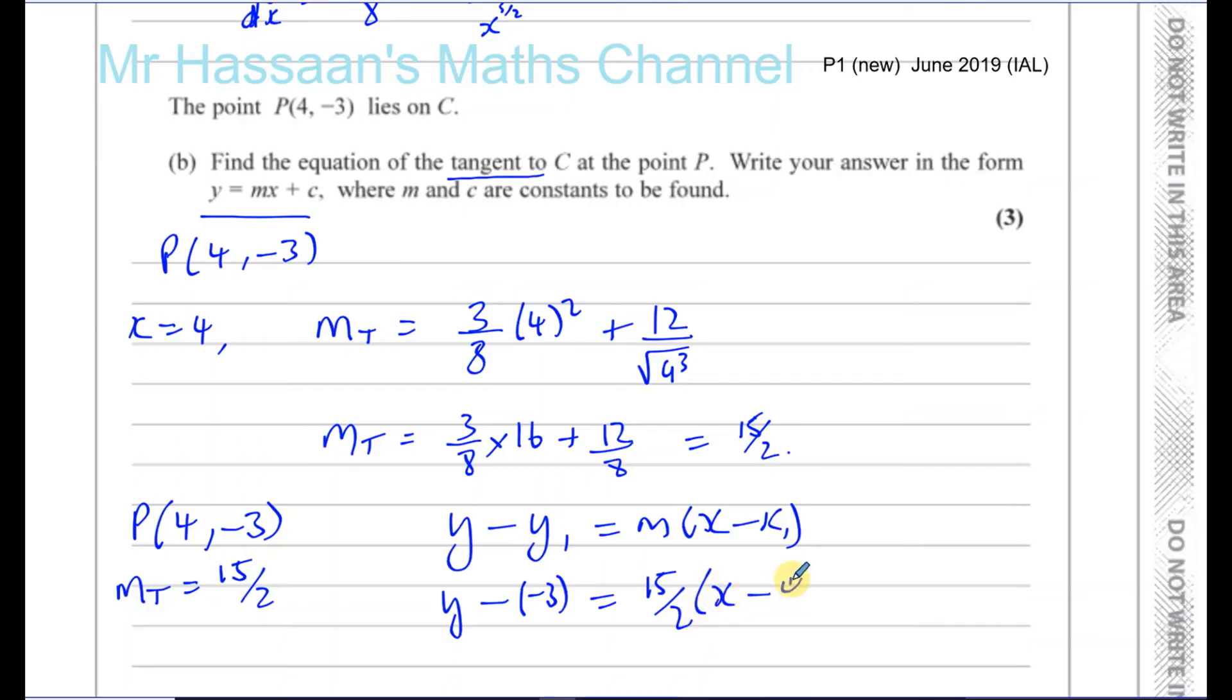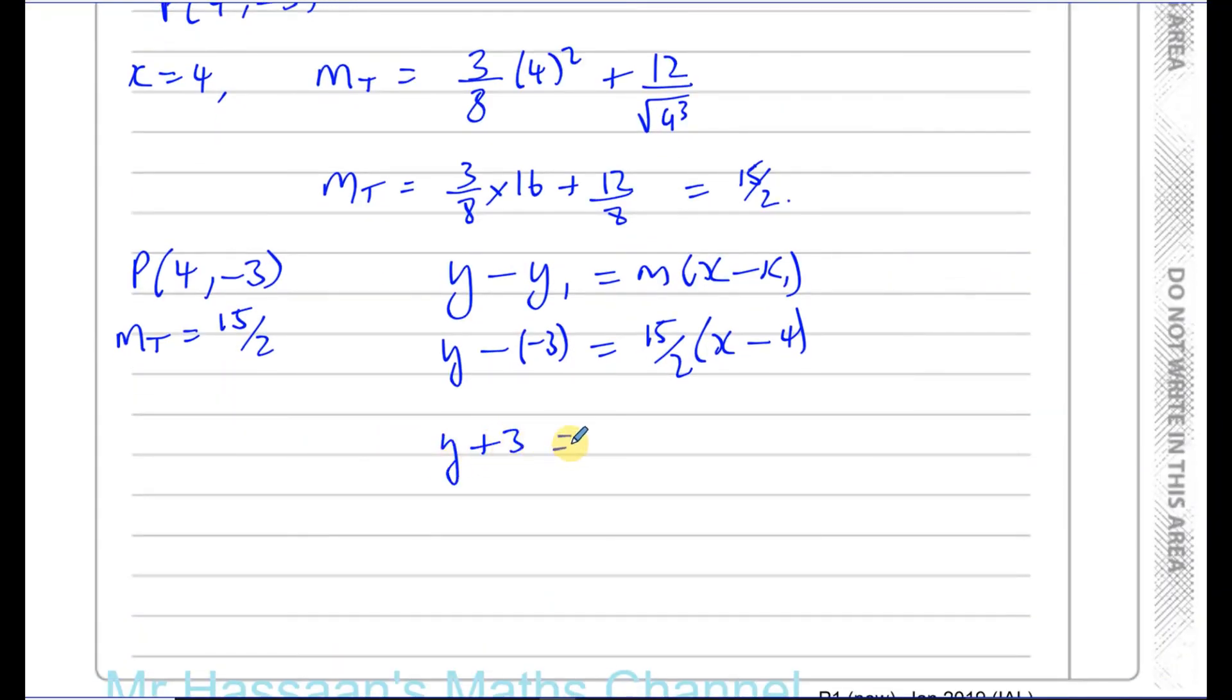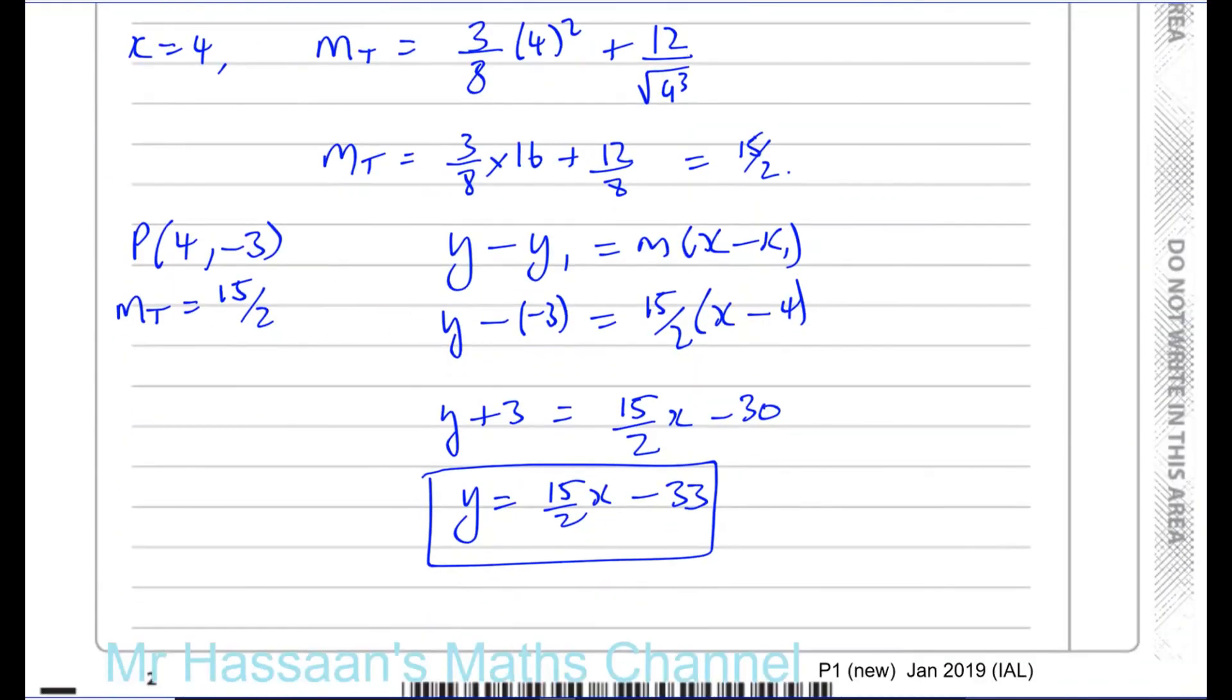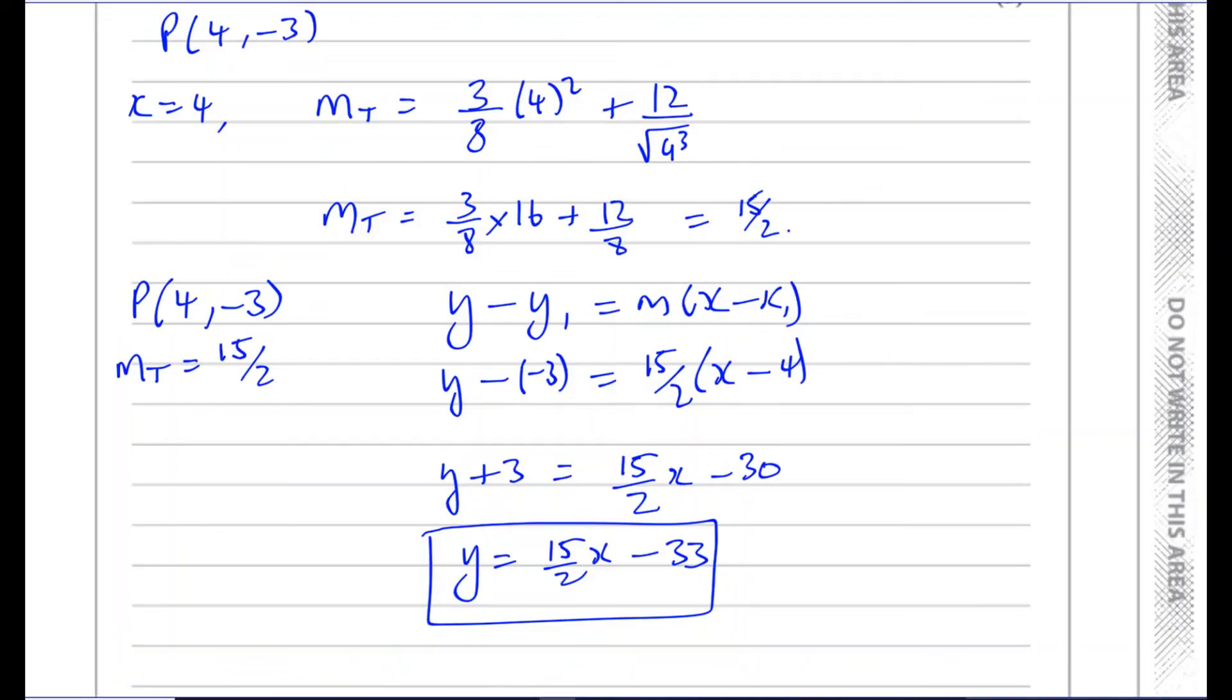So you end up with y plus 3 equals 15/2x, now 15/2 times minus 4, the 2 is cancelled with the 4, you're left with minus 30. So that's like 15 times minus 2, which is minus 30. So y is equal to 15/2 x minus 33. You have to subtract 3 from both sides. And there we have the answer to that question in the form required, y equals mx plus c. So you have to write it with y as a subject of the formula. So there's the answer for question number 1, a and b.